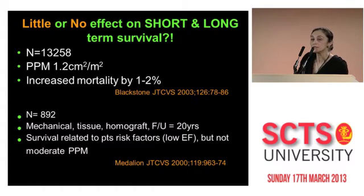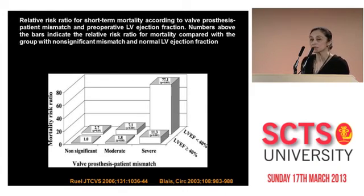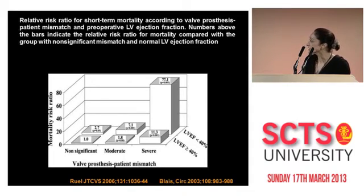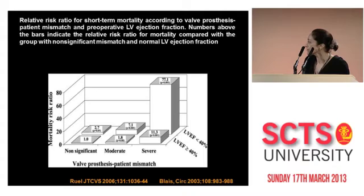However, a factor which determined their outcome was a lower ejection fraction. Many of you may have seen this study by Dr. Blais, Dr. Pibarot, and colleagues from Quebec, where they've done a lot of work on mismatch. This paper was published in Circulation. They looked at 1,200 patients fairly equally divided into no mismatch, moderate mismatch, and severe mismatch. They further divided the cohort into those with an ejection fraction of more than 40% and those less than 40%, and showed that outcome in patients with a poorer ventricle was worse.